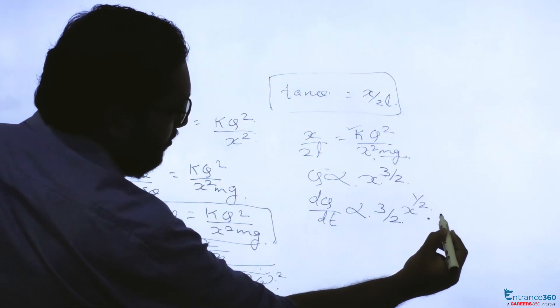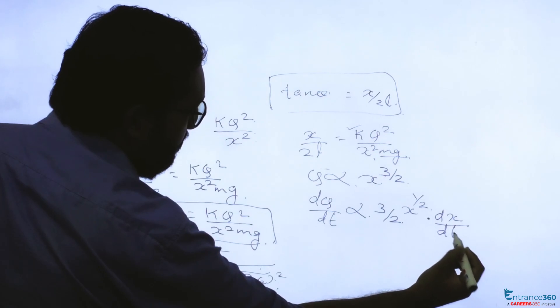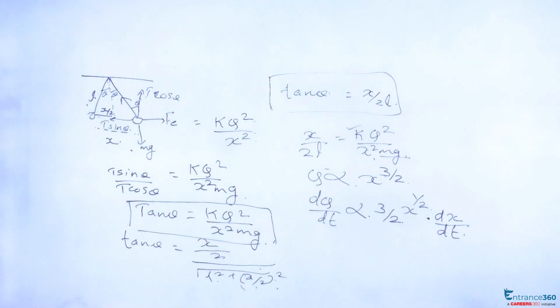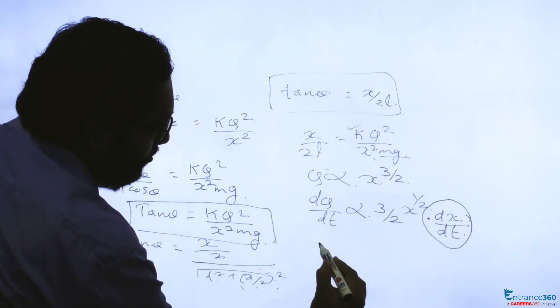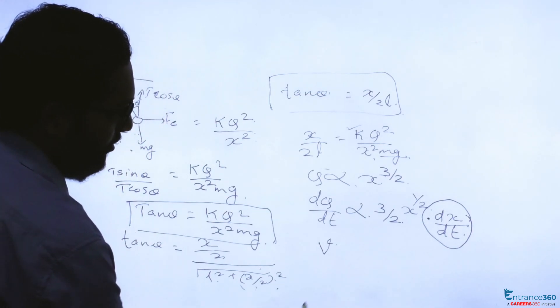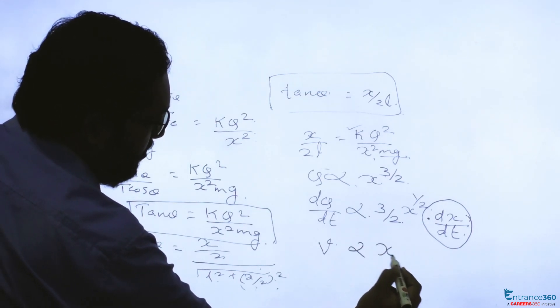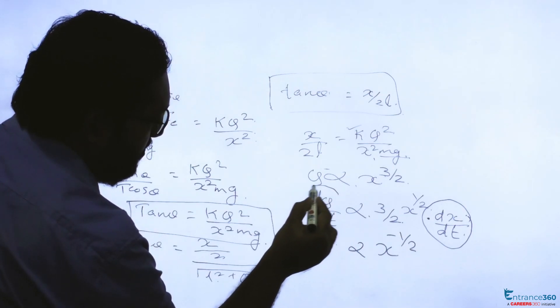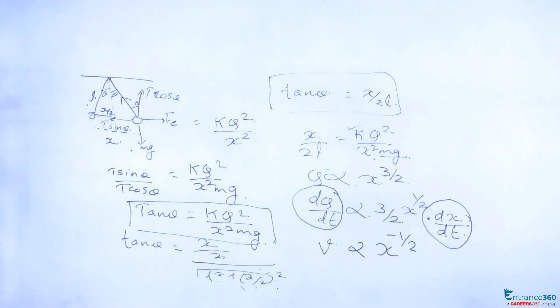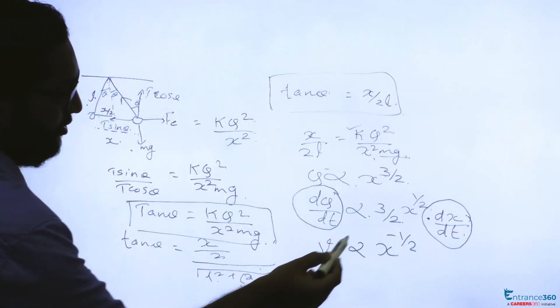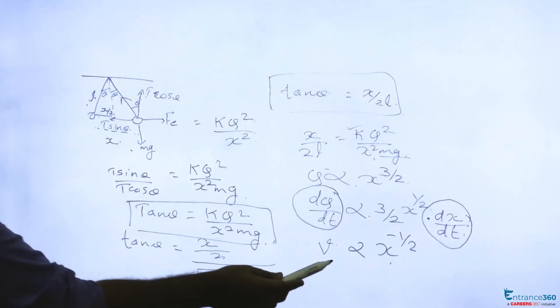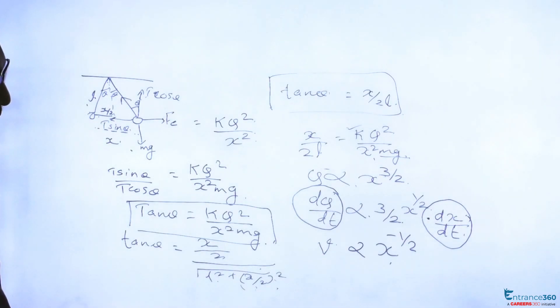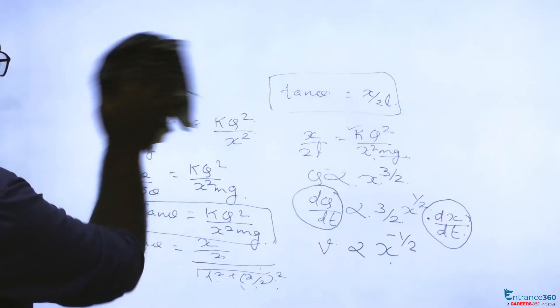dq by dt equals 3 by 2 times the constant times x raise to 1 by 2 times dx by dt. Since dx by dt is our velocity, so velocity is proportional to x raise to minus half, because the charge is discharging at a constant rate. This value is a constant, so 1 by x raised to half is x raised to minus half.